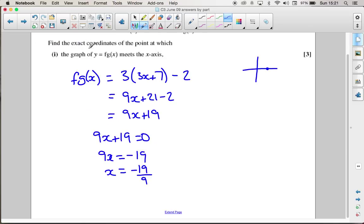We need the full coordinate, so that's minus 19 over 9, 0.